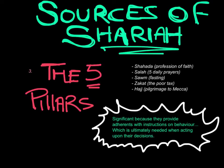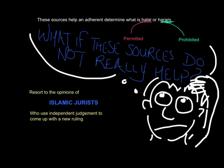The five pillars are also important because they essentially provide instructions on behaviour — enforcing what Muslims should or should not do. All of these sources teach the Islamic way of life, the importance of faith, and through their teachings address bioethical issues including abortion and euthanasia. These sources help an adherent to determine what is halal (permitted) or haram (prohibited).